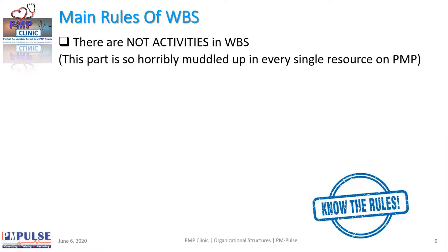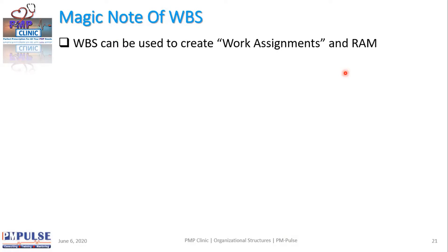A completed WBS can be used for identifying all possible activities. Where do we do that? There is a process in the knowledge area called Schedule Management, and that process name is Define Activities. Now WBS can also be used to create work assignments, which is called RAM — or in some companies, RACI — which stands for Responsibility Assignment Matrix.